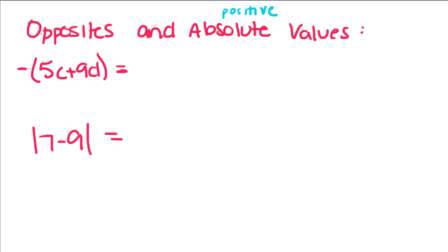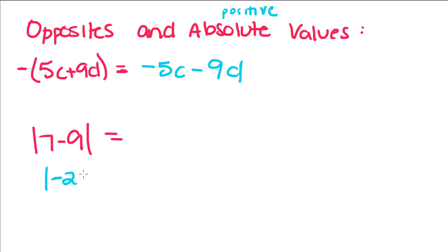For this, we would take the opposite sign of 5C and 9D, so we get negative 5C minus 9D. For our absolute value, we would do the subtraction inside the absolute value bars, so you get negative 2, and then these bars tell you to take the positive value. So the positive value of negative 2 is positive 2.